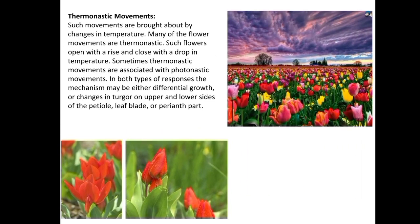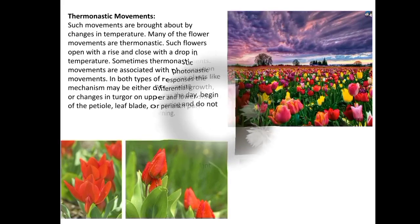Thermonastic movement occurs due to changes in temperature. Flowers of a plant open with a rise in temperature and close with a drop in temperature. This is sometimes associated with photonastic movement, and the response mechanism is related to growth changes in the turgor on the upper and lower sides of the petiole and leaf blade. For example, flowers of tulips and crocus open during the high temperature of the day and close during the low temperature of the night.